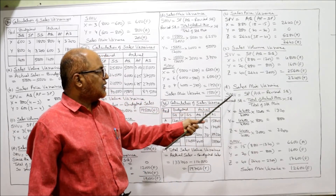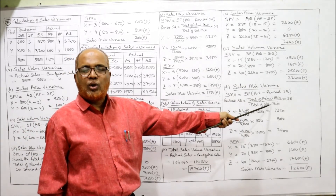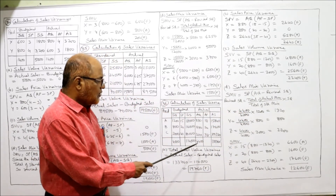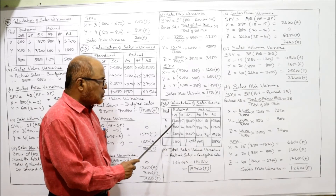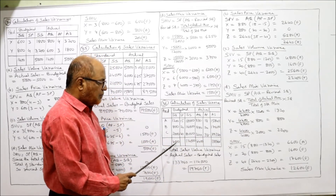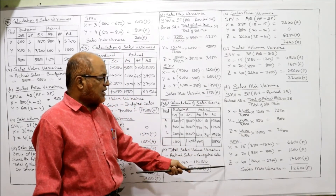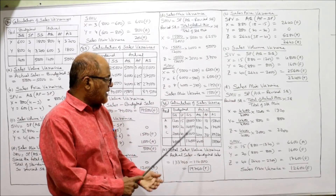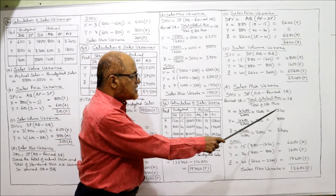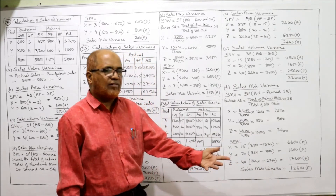Sales mix variance equals standard price into (actual quantity minus revised SQ). Revised SQ equals total actual mix divided by total standard mix into standard quantity. Actual mix is 4,400 and standard mix is 4,000. For A: 4,400 ÷ 4,000 into 1,200 equals 1,320. For B: 4,400 ÷ 4,000 into 800 equals 880. For C: 4,400 ÷ 4,000 into 2,000 equals 2,200. Standard prices 15, 20, 40; actual quantities 880, 880, 2,640; revised SQ 1,320, 880, 2,200. Result: 12,600 favorable — that is the sales mix variance. This is the end of problem 36, the last and final problem on variance analysis.